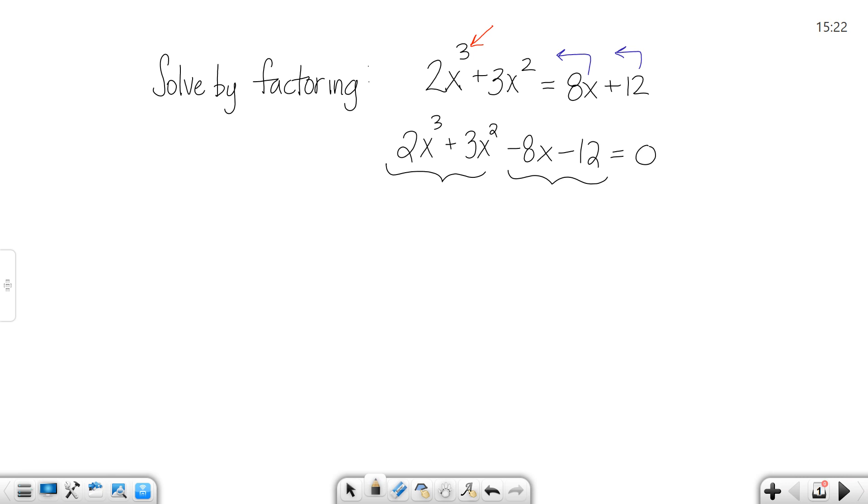In the first two, they share a common factor of x squared. So I'm going to take out x squared. What's left behind is 2x plus 3.